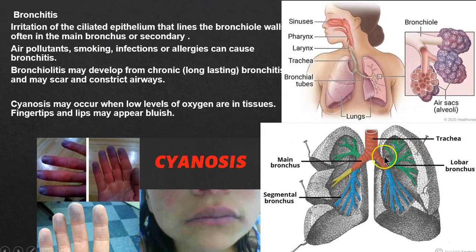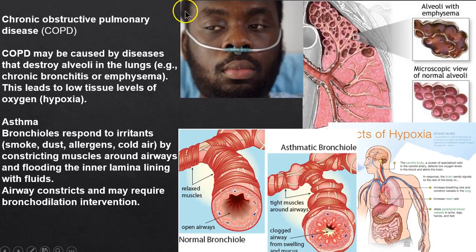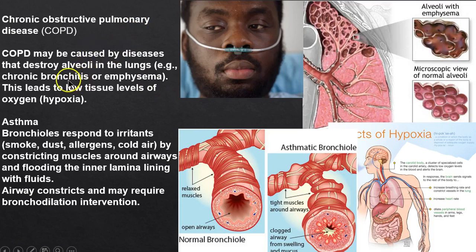The bronchi include the main bronchus, lobar, and segmental branches. If this tissue becomes inflamed we may get bronchiolitis, which over time damages the lining, constricts the airway, and causes scarring. The result can be cyanosis — fingertips and lips turning bluish due to low oxygen. For some people with emphysema this can be lifelong. COPD encompasses anything that obstructs the airway; we usually think of emphysema and bronchitis or bronchiolitis causing chronic hypoxia.